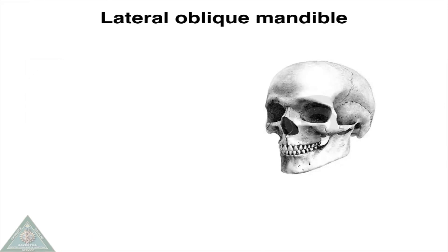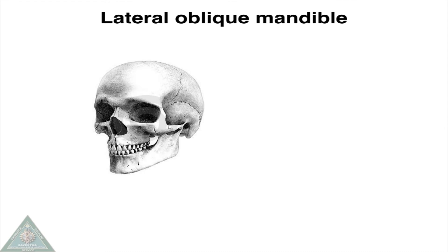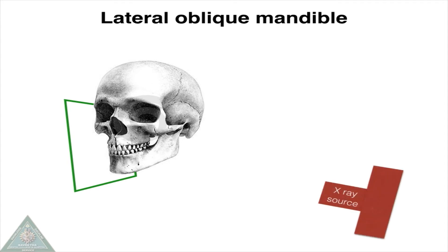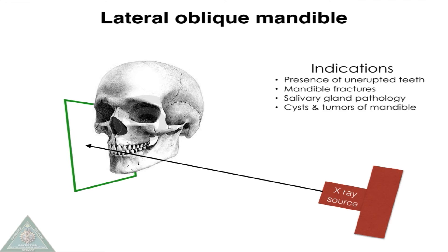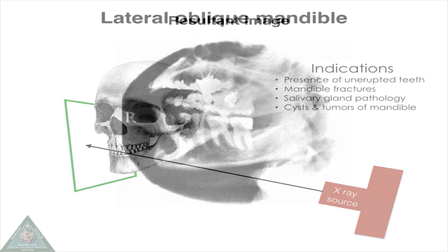Lateral oblique mandible: the image receptor is placed on the side of the face in the mandible region and the X-ray beam is directed through the premolar-molar area of the opposite side. The resultant radiograph looks like this.